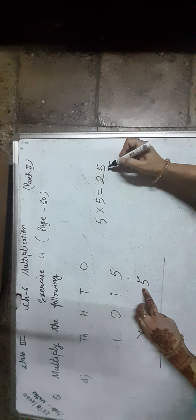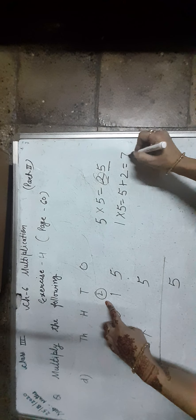Now let us learn multiplication of 4-digit numbers by a 1-digit number in exercise 4, on page number 60. Find the product of 1,015 and 5. Start from the 1s place digit: 5 × 5 is equal to 25 — we write 5 in the 1s place and carry 2 to the 10s place. Now, 1 × 5 is equal to 5, plus 2 carry over, together 7. We write 7 in the 10s place.